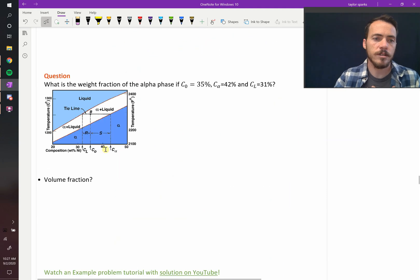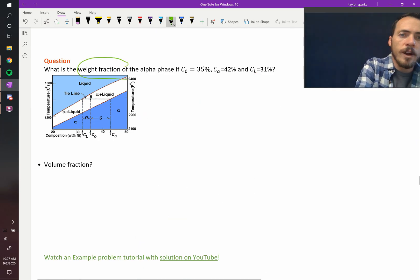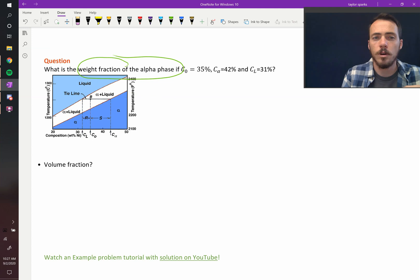Now let's do one more example of this. So it says, what is the weight fraction of the alpha phase if the initial composition was 35? The composition of the alpha phase is 42%. The composition of the liquid phase is 31%. So they want to know the weight fraction of the alpha phase. Well the alpha phase is on the right hand side. It's to the right of the tie line. So what portion of the tie line do we want?